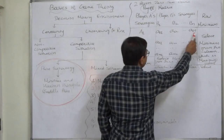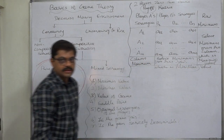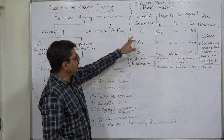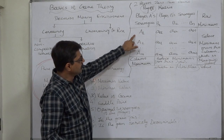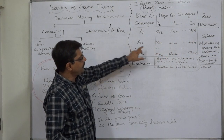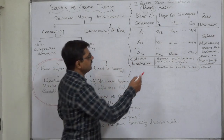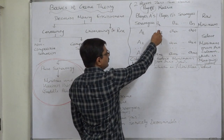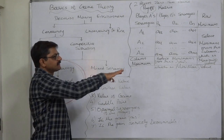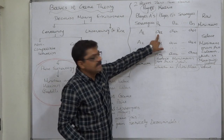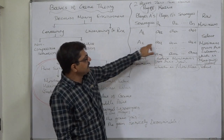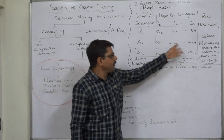If we read this matrix row by row, these are the outcomes of the various strategies of A. If A selects strategy A1, the payoffs are A11, A12, and so on. If A selects strategy A2, the payoffs are A21, A22, and so on. On the other hand, if B selects strategy B1, the payoffs are A11, A21, and so on, but they are numerically exactly opposite to A's payoffs. So if A11 is a gain for A, it is a loss for B, and similarly for all other payoffs.